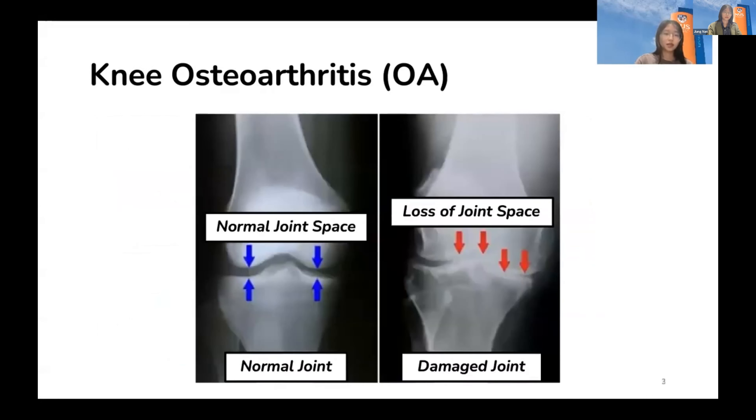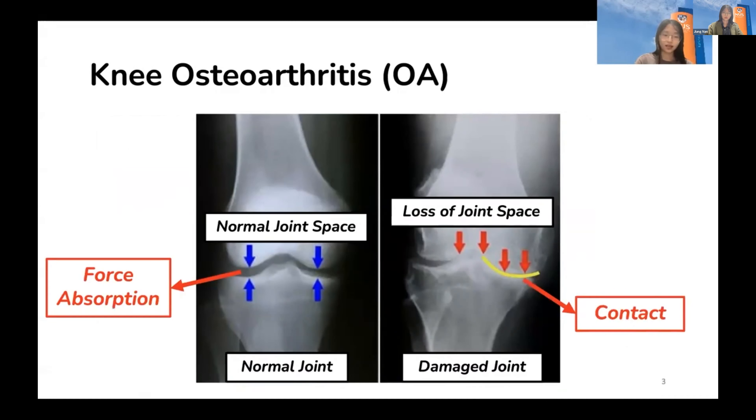So what is knee OA? Basically, knee OA is a knee joint disorder which leads to a loss of joint space that can absorb force of impact between the bones. This loss of joint space brings bones into direct contact on the surface highlighted in yellow and finally leads to knee pain.